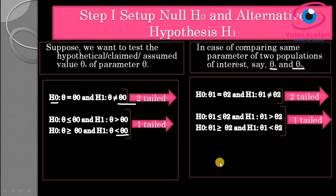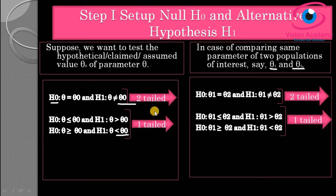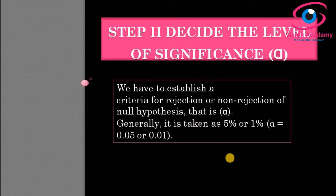For a detailed lecture on how to formulate null and alternative hypotheses, and how to decide between one-tail and two-tail tests, please look into the description box where separate videos are available. Our second step is deciding the level of significance, that is alpha.